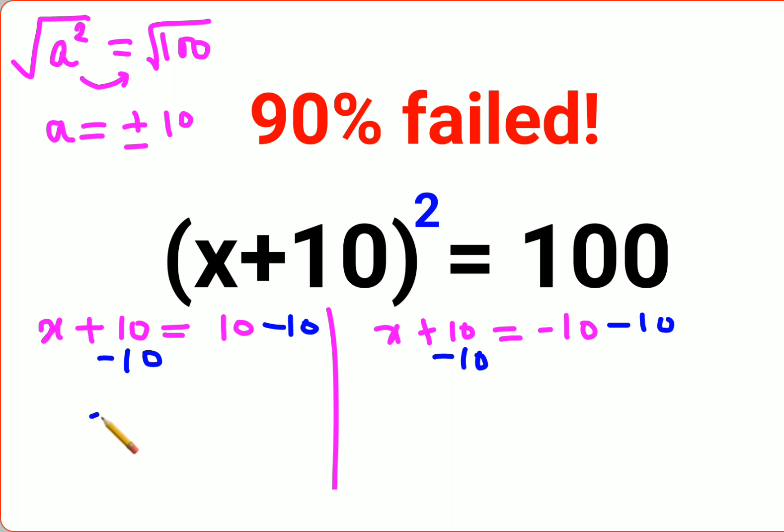Here what you get is x plus 10 minus 10 gets you 0, so x equals 0. This is one answer. The other answer is x equals minus 10 minus 10, that gets you two subtractions, which means you need to do addition, and the answer will be negative 20.